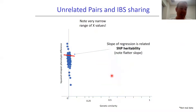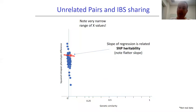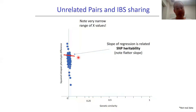With GCTA and GREML using unrelated individuals, there's again a very narrow range of X values, meaning we don't have much power. The slope of that regression is going to be a lot flatter than in the previous two examples, and that's because we're estimating SNP heritability, not narrow sense heritability — a very important point.